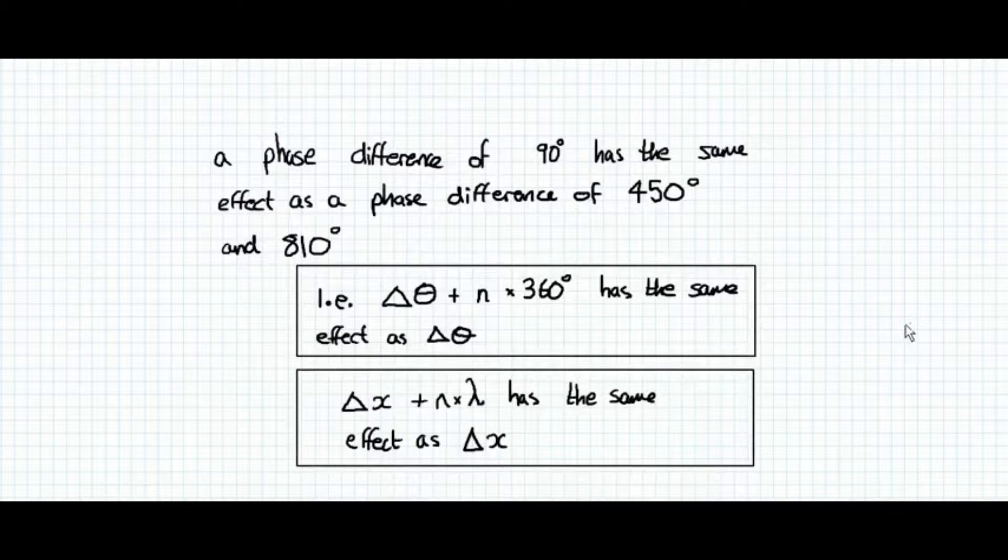Another important thing to note is that phase difference of 90 degrees is exactly the same as a phase difference of 450 degrees, or 810 degrees. That is because the influence is the same. So 450 degrees is just 360 degrees, plus 90 degrees. And 810 degrees is just two lots of 360 degrees, that's 720 degrees, plus 90 degrees.